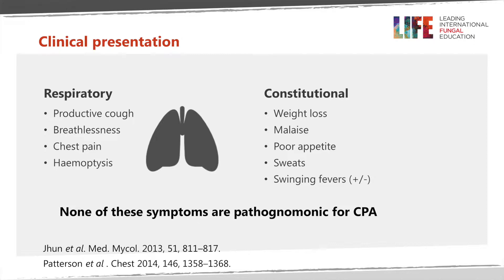It's worth noting that while haemoptysis can be highly suggestive of CPA in patients with radiological aspects of the presentation, no one symptom is absolutely characteristic of CPA. When you consider symptoms that people might have with other respiratory illnesses such as tuberculosis, chronic COPD, or sarcoidosis, none of these symptoms would separate the underlying disease from CPA as a complication on its own.